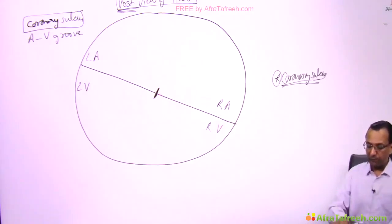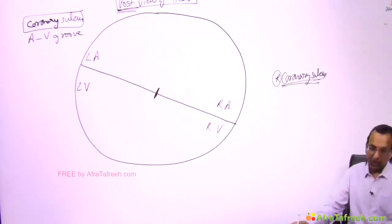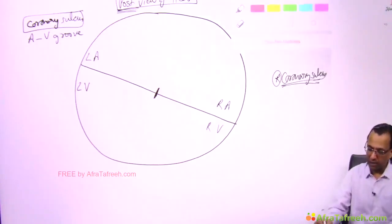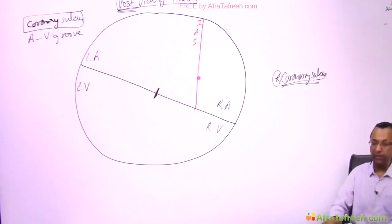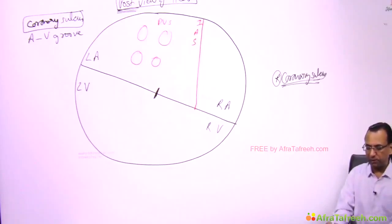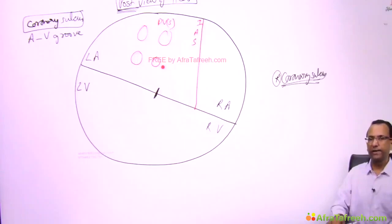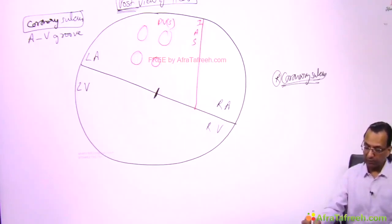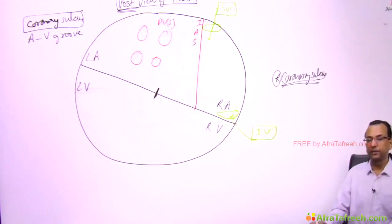The atria are more superior and the ventricles are more inferior. The inter-atrial septum divides the right atrium from the left atrium. There are four pulmonary veins opening into the left atrium. The right atrium has three openings: the superior vena cava, the inferior vena cava, and the coronary sinus.